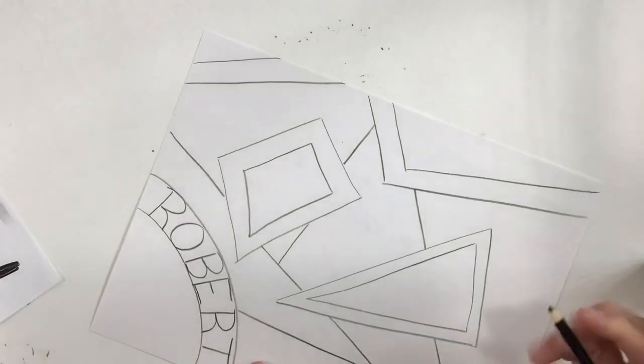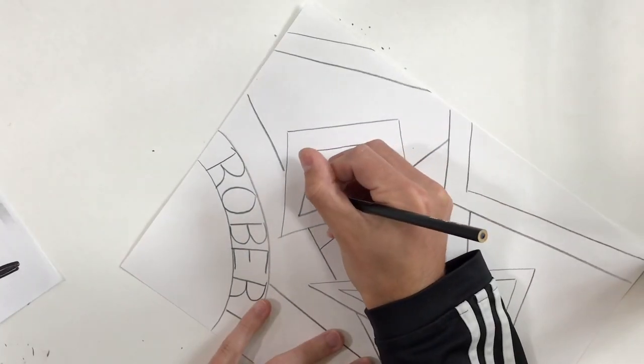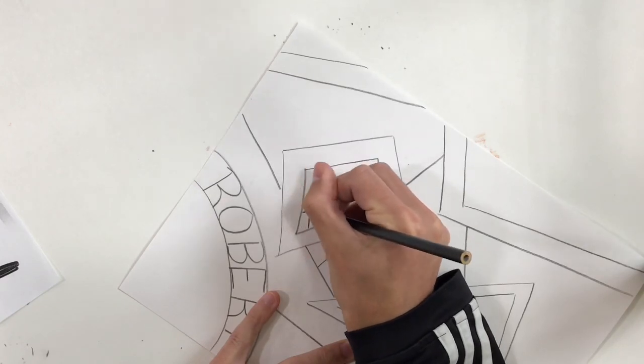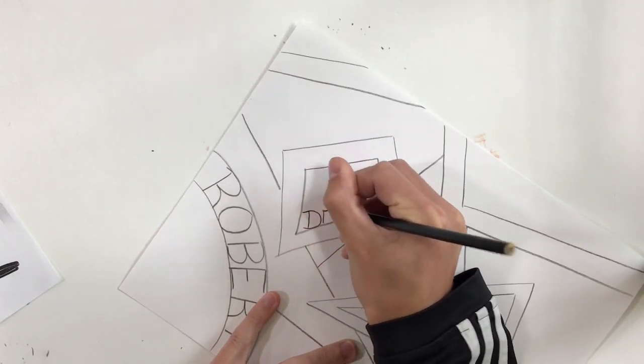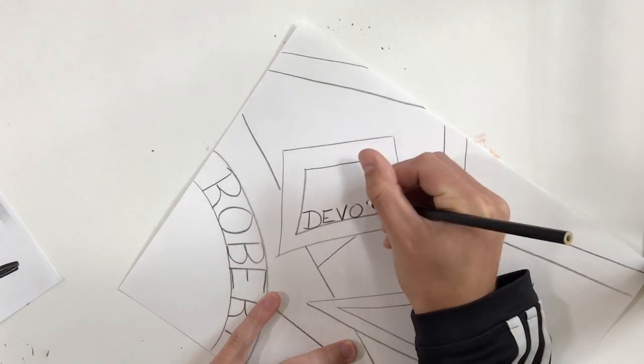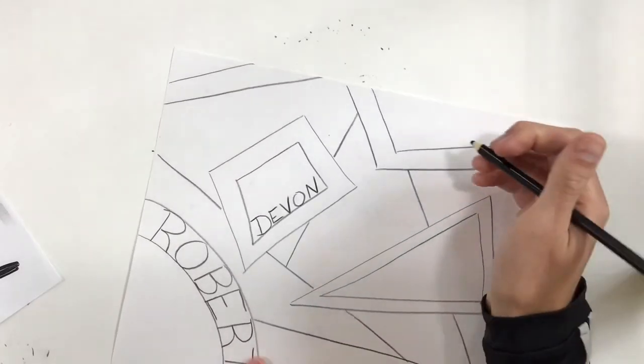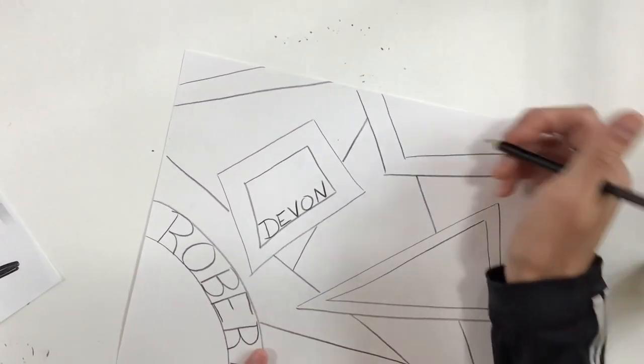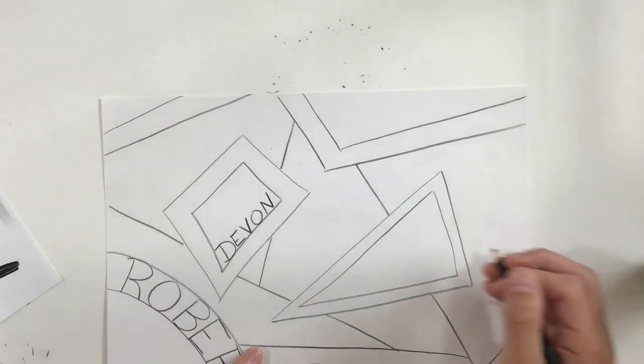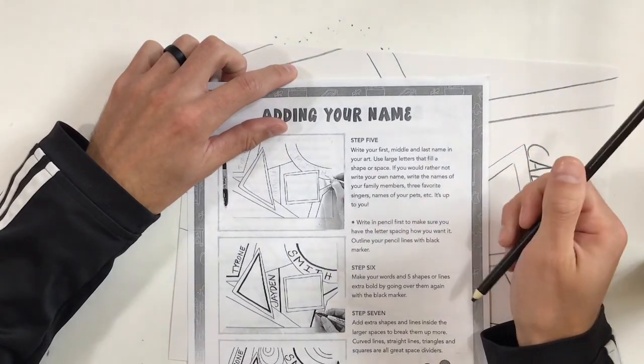Then I've got, we'll do Devon right here. Devon is my middle name. I actually go by my middle name, not my first name. And then I've got Calvert, which is my last name. And maybe I'll do Calvert right here. There we go. So step five was to write my first, middle and last name.